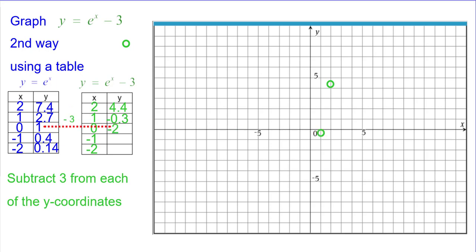1 minus 3 is negative 2, 0, negative 2. Point 4 minus 3 is negative 2.6, so negative 1 comma negative 2.6. And finally, negative 2 comma negative 2.86.